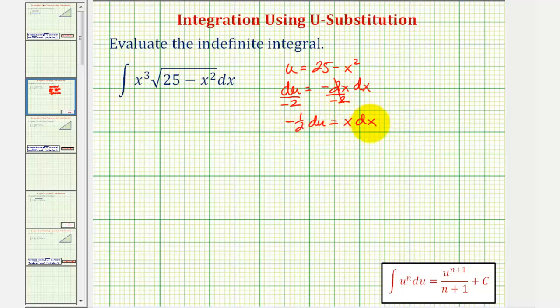Now, there's a slight problem here. Notice how we have x cubed dx, not x dx. This x here will take care of one factor of x, but we'll still have a factor of x squared. So you might be thinking, what should we do with that?